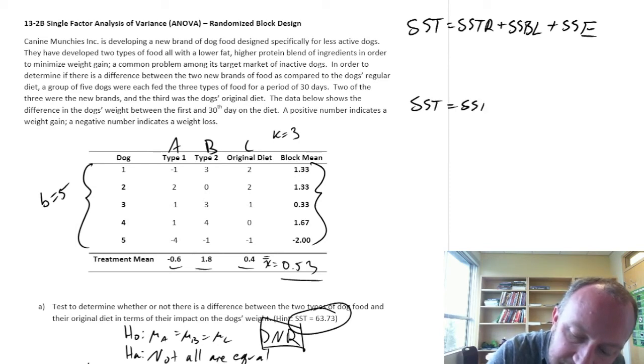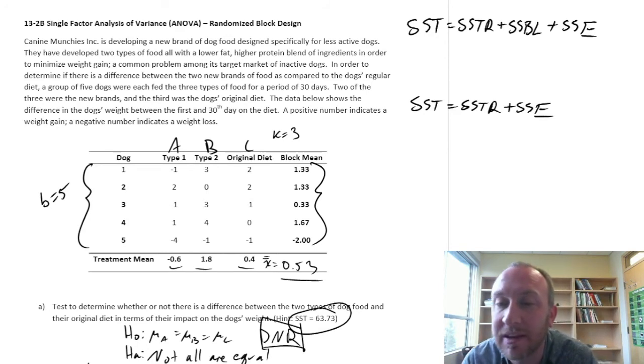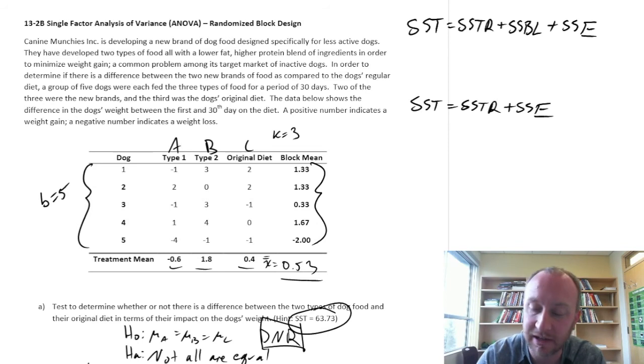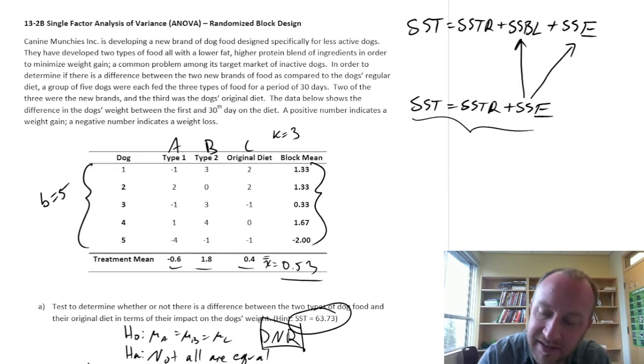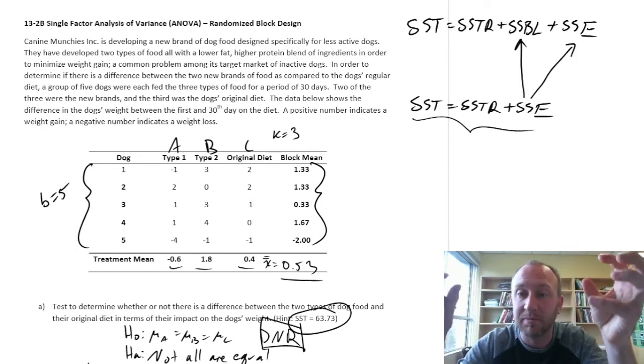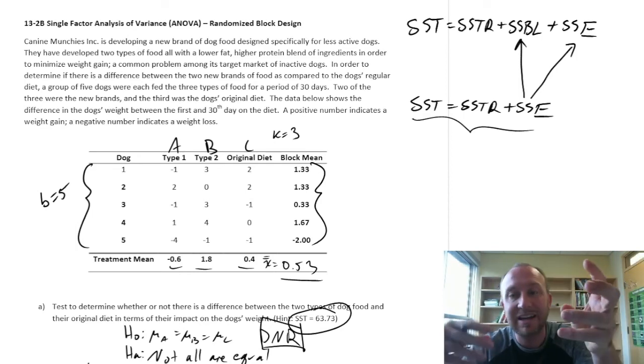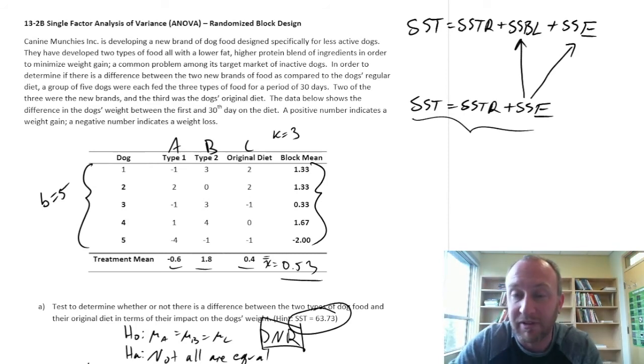And if we were to have treated this as a completely randomized design. It would just be SSTR plus SSE. And remember that I said that by blocking it. By designing it as a randomized block experiment instead of just this. We are effectively partitioning this SSE into its two components. That which is due to blocking and that which is due to random variation.